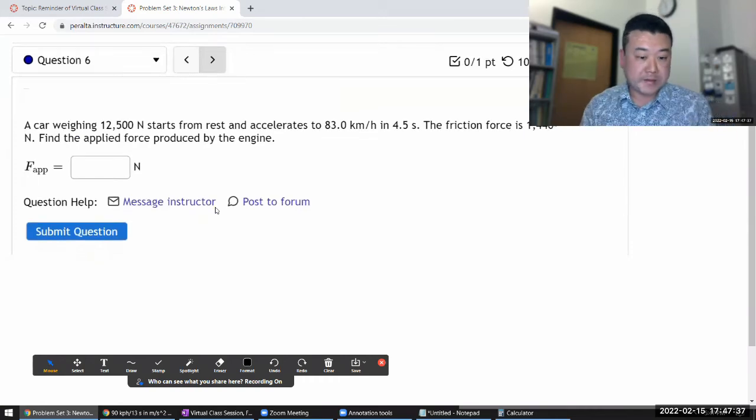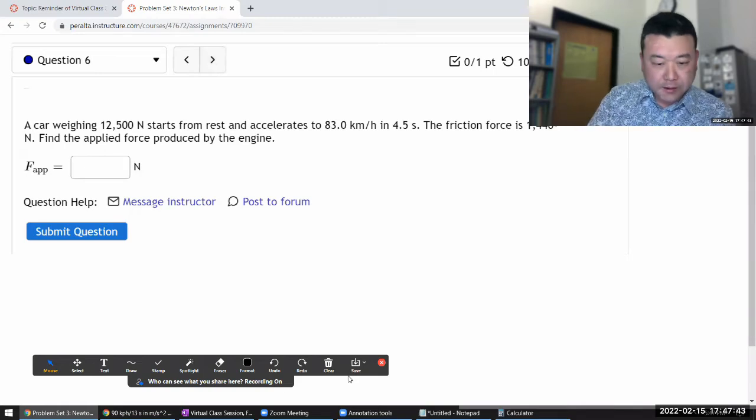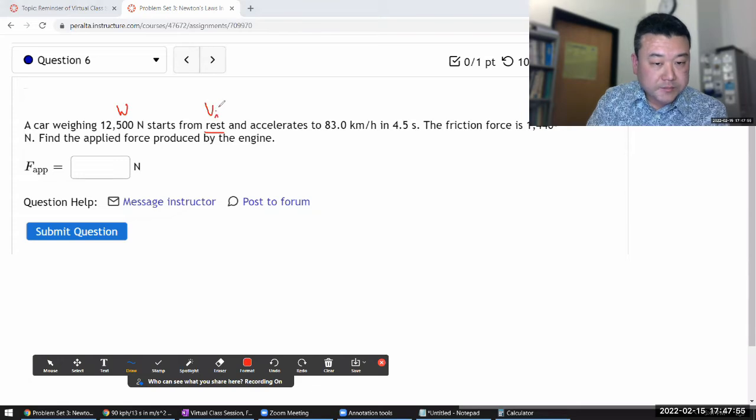Alright, so it says a car weighing some amount. Let me start labeling my quantities again. It starts from rest, so my initial speed was zero, and accelerates to this amount in this amount of time.